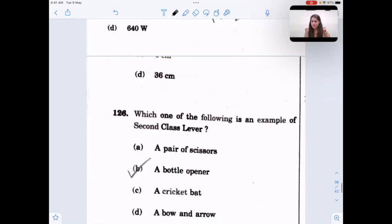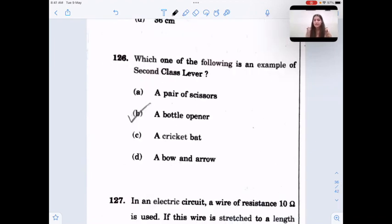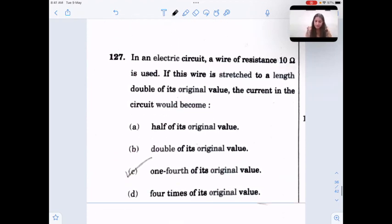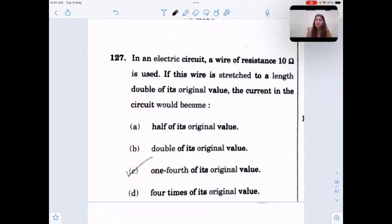Example of second class lever is a bottle opener. In an electric circuit, a wire of resistance 10 ohm is used. If this wire is stretched to double of its original length, the current in the circuit would become -